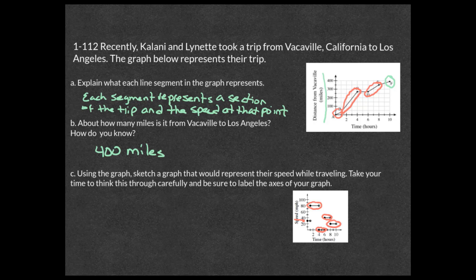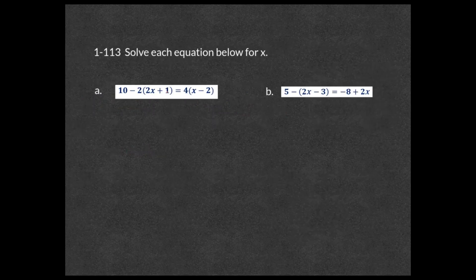Moving on — this problem asks us to solve equations for x. For part a, don't forget to distribute: you distribute the 2 to the 2x and to the 1, and you distribute the 4 to both terms. That gives you 10 minus 4x minus 2 equals 4x minus 8.